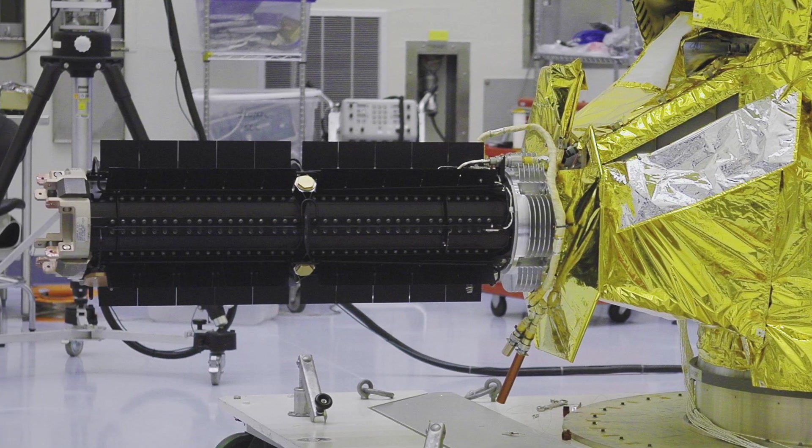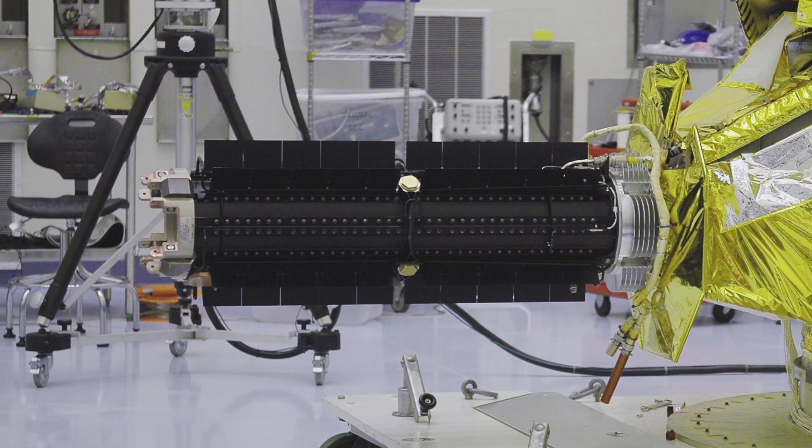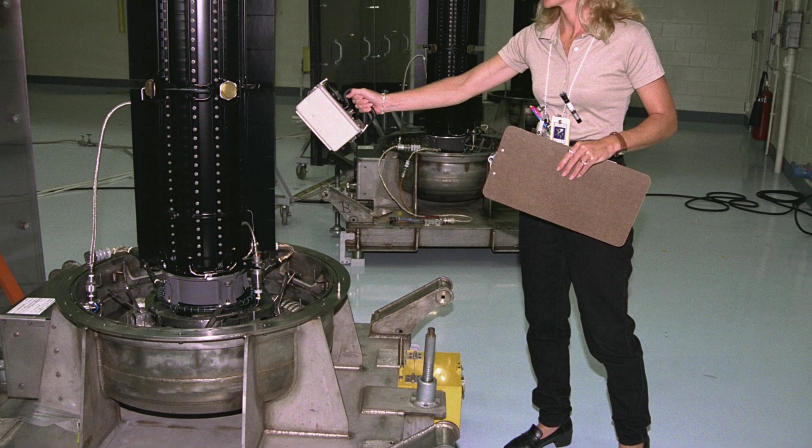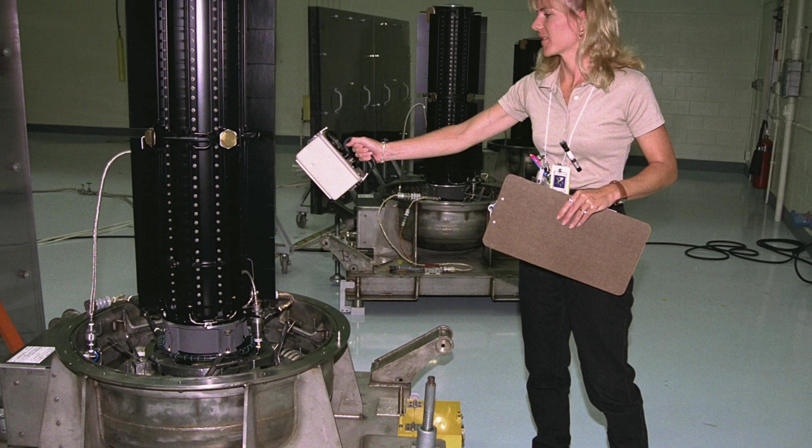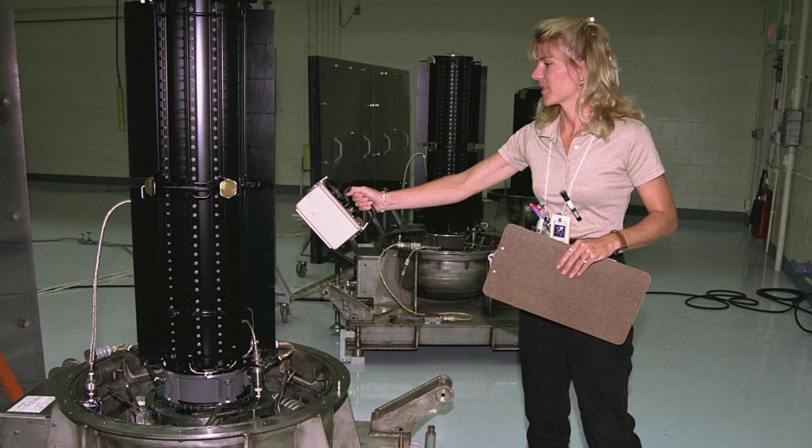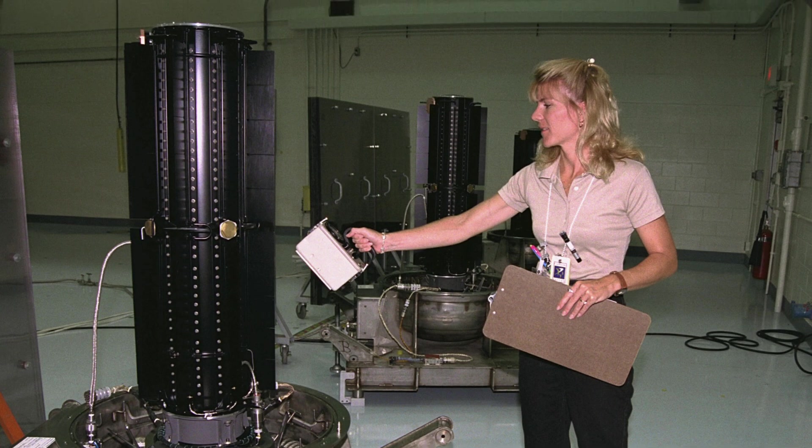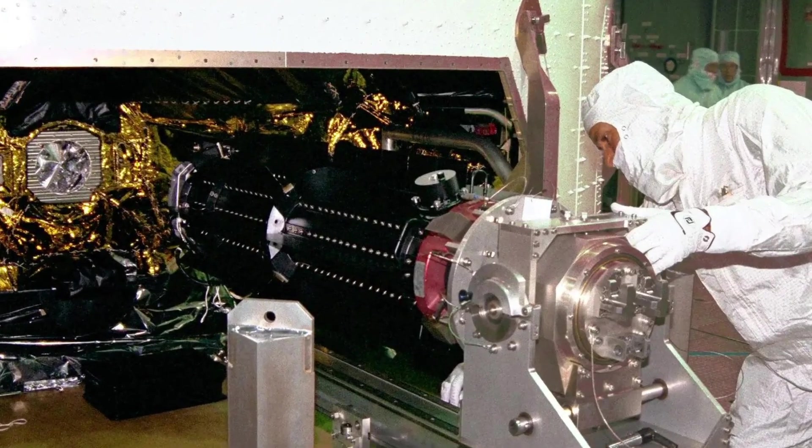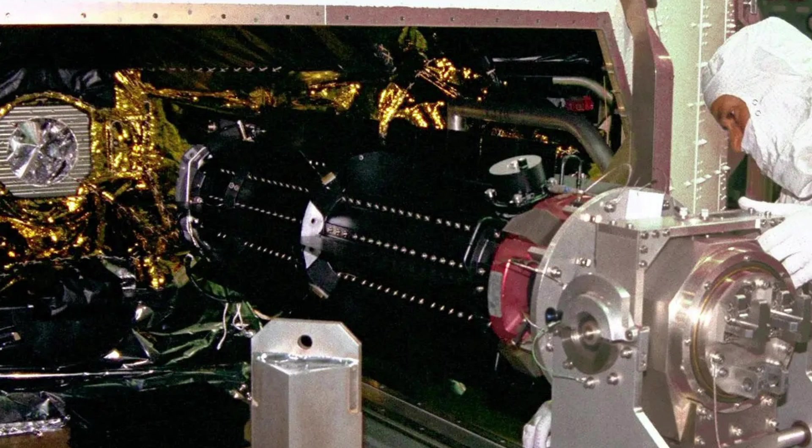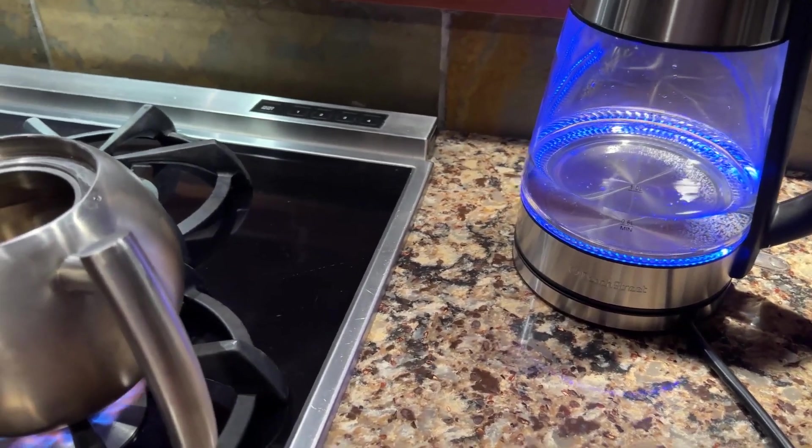For example, a modern American GPHS-RTG like those installed on probes like Galileo, Cassini, and New Horizons weighs 57 kilograms and is a cylinder one meter and 14 centimeters long, with a diameter of 42 centimeters. The device only provides about 300 watts of electrical power, not enough to power even an electric kettle.